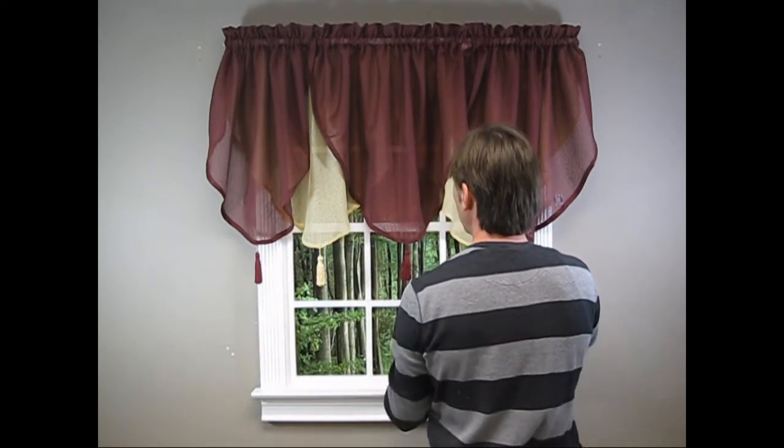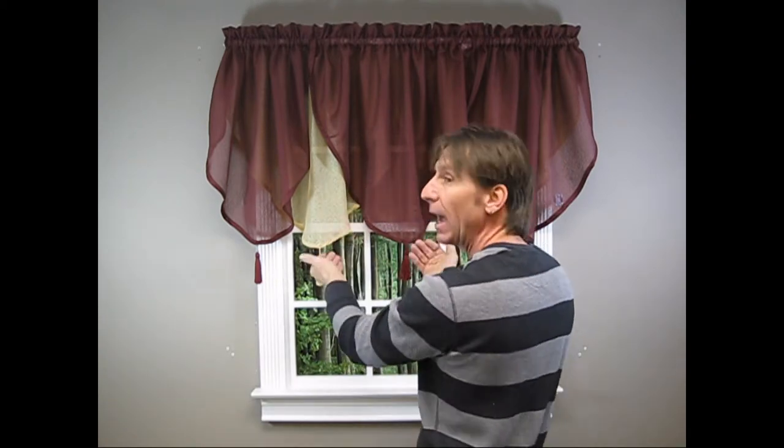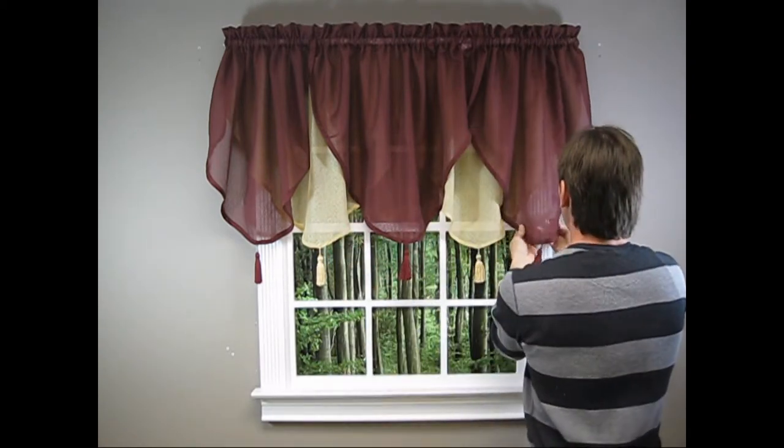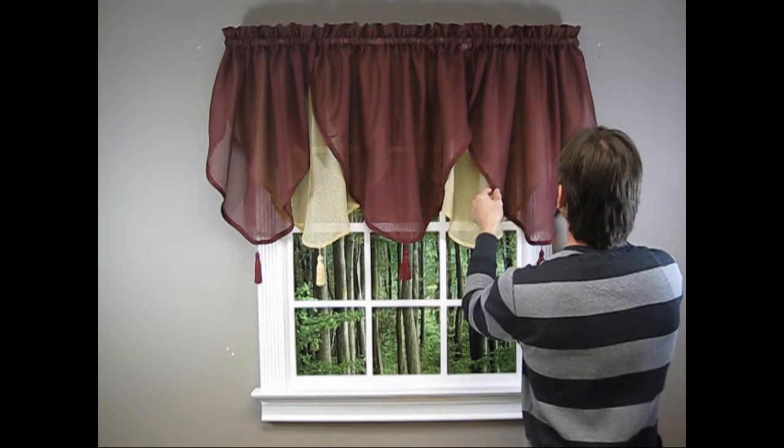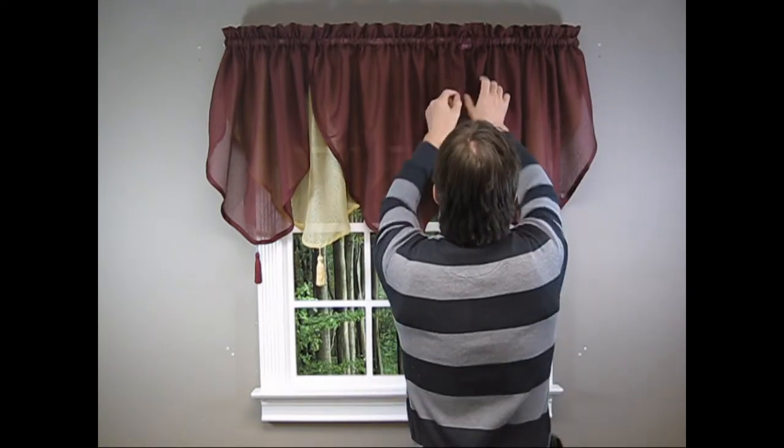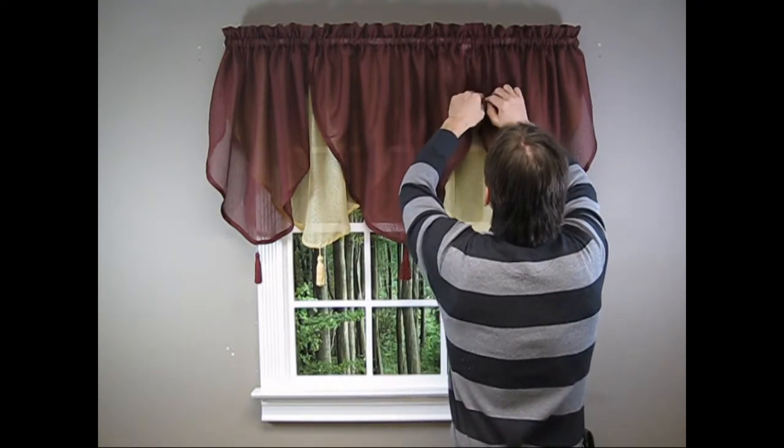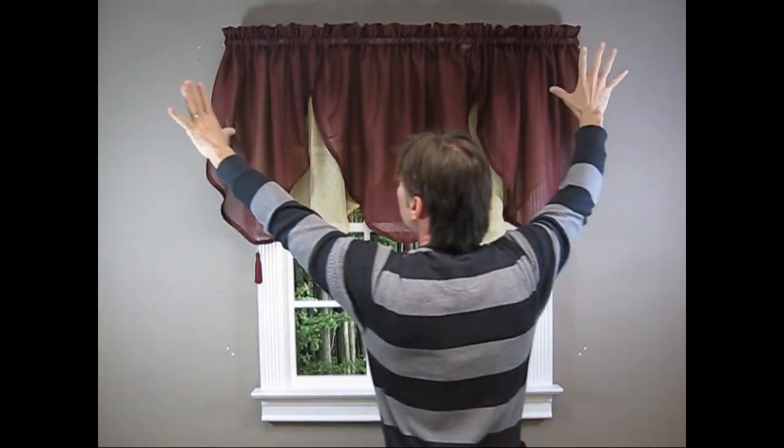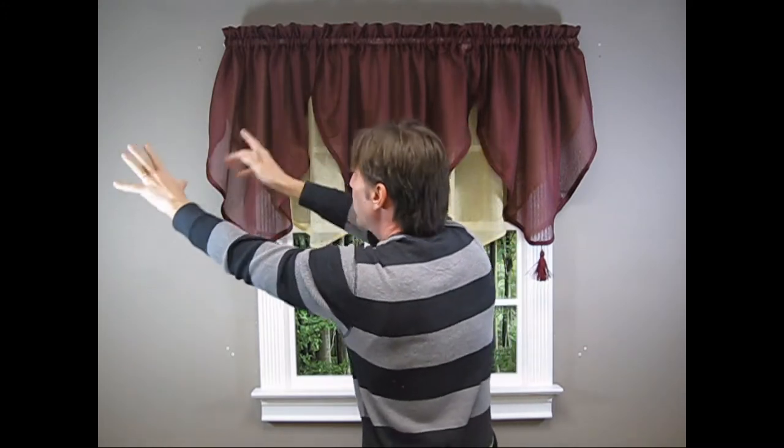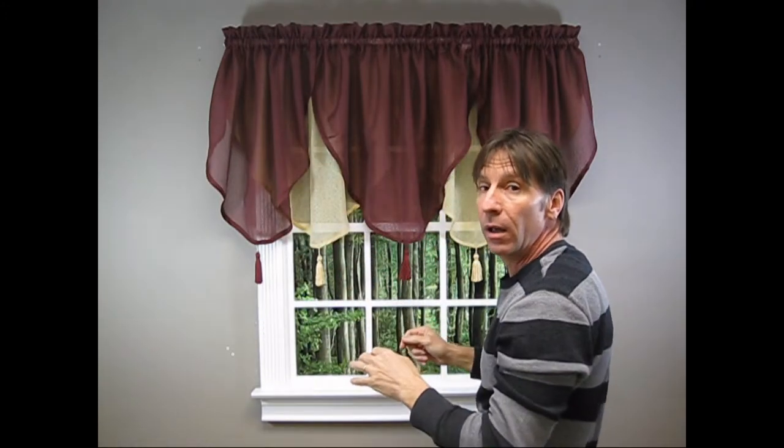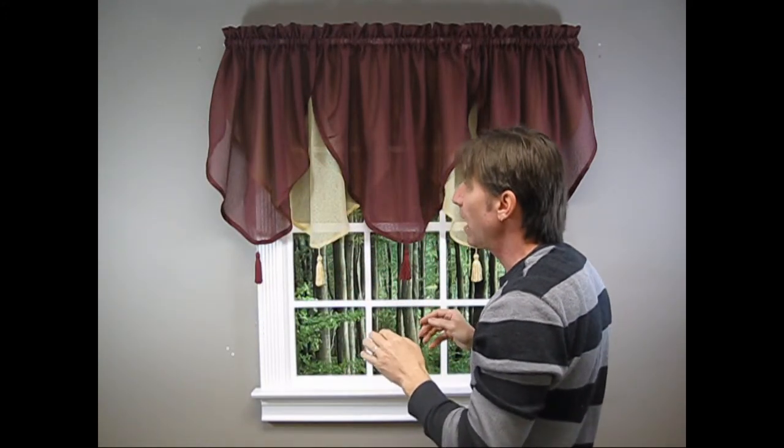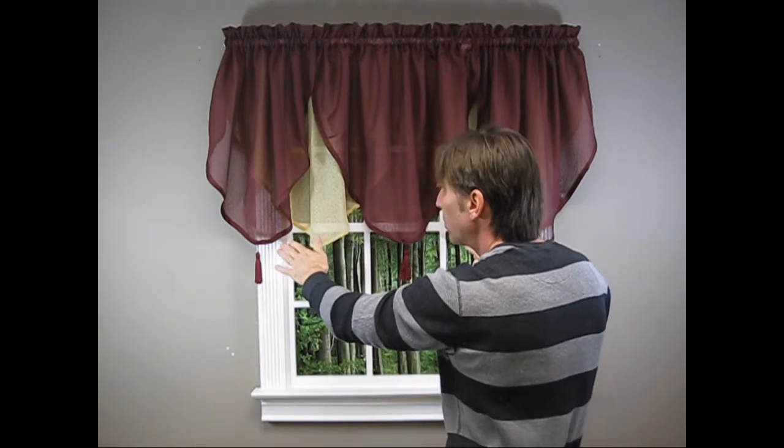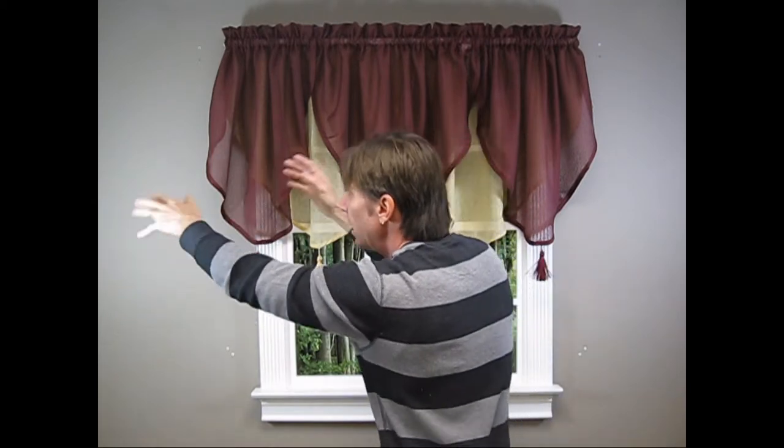But you can install it the other way, or you can put two back and three forward, or three back and two forward. It's really personal preference. And if you have a longer window, you can continue this combination of ascot valances throughout the length of the window or the wall for that matter. You don't have to stop at five—you can go six, seven, eight, nine, ten, twelve, infinity.